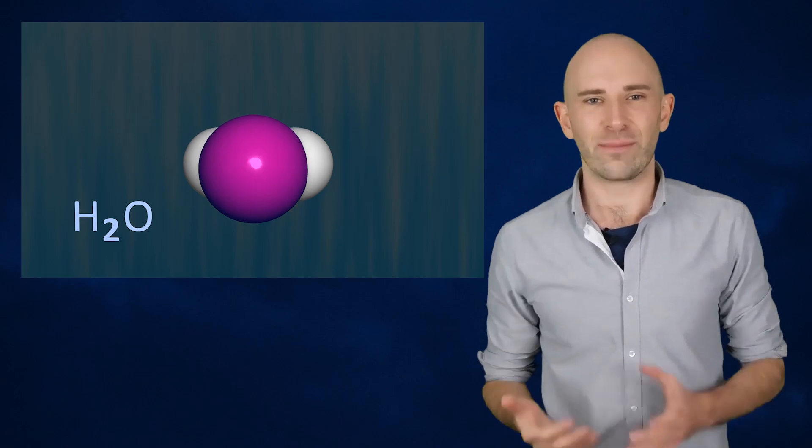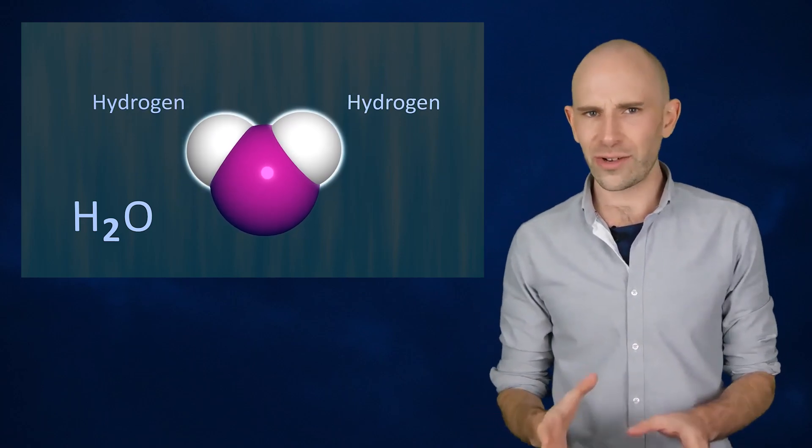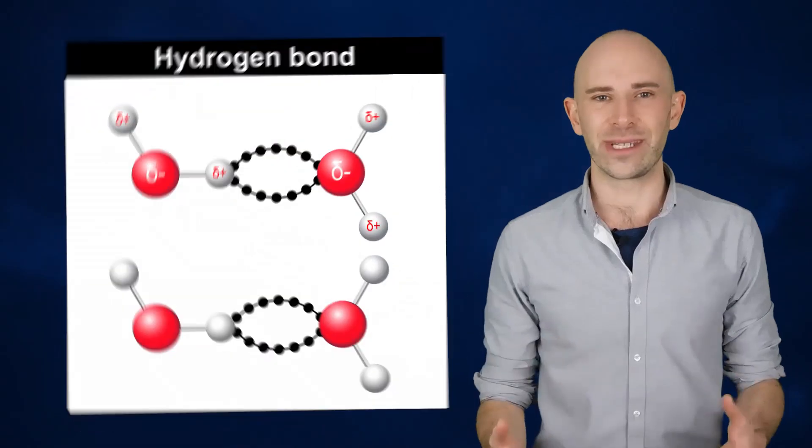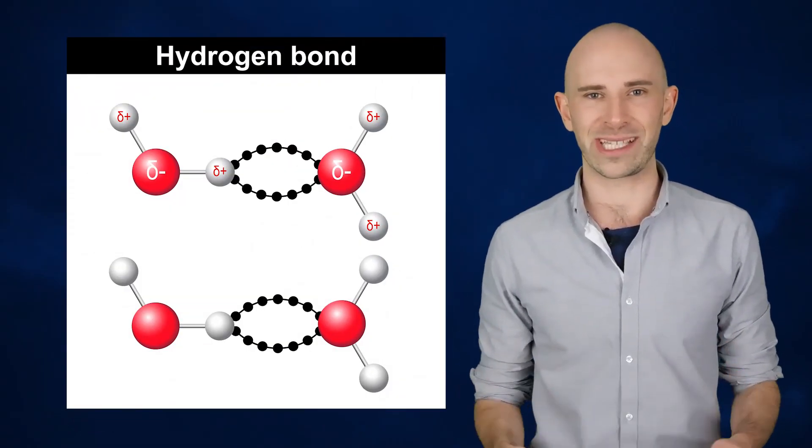Called a polar molecule, the negative poles on each water molecule are attracted to the positive poles on other water molecules, and as a result, they knit tightly together with hydrogen bonds.